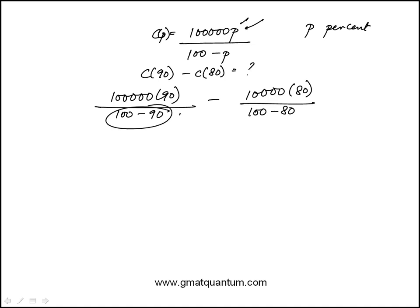So this is 10. So that becomes 9 times 100,000. And this is 20.